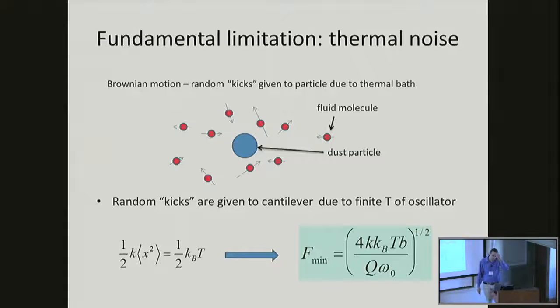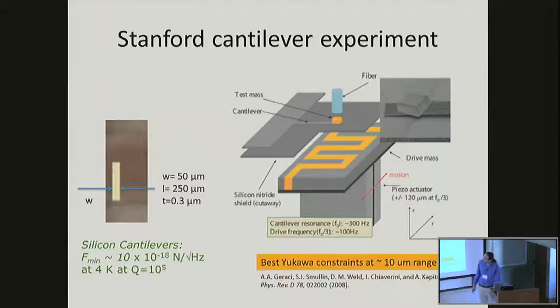If I ask how small of a force can I really see, one of the fundamental limitations in these measurements comes from thermal Brownian motion. This cantilever beam or mass on spring is in contact with some thermal bath at some finite temperature. If I write down the equipartition theorem and analyze what is the smallest force I can detect in the presence of these random thermal vibrations, I can derive this formula: the minimum force I can see goes like the thermal energy kT times the spring constant times my measurement bandwidth divided by the mechanical frequency and the mechanical quality factor, all to the one-half power.